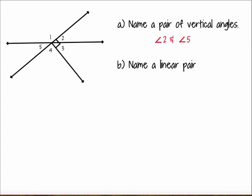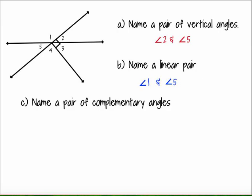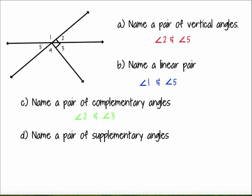If we were to name a linear pair, there are actually two different linear pairs in this picture. Remember it's two angles side by side that form a straight line or a straight angle. So 1 and 5 would be a linear pair, and so would angles 1 and 2. If we were asked to name a pair of complementary angles, that's fairly simple because there's only one guaranteed 90 degree angle in the picture, and that comes from our combination of angles 2 and 3. For supplementary angles, those are our linear pairs — 1 and 5 are supplementary, and so are 1 and 2. Since I was only asked to name one pair, I'm going to stick with 1 and 5.